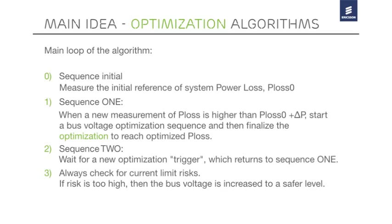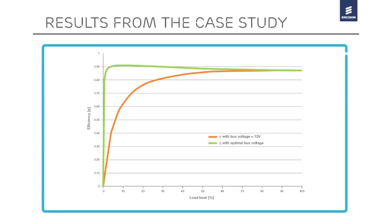This diagram is self-explanatory. It shows the results of the system efficiency optimization at different payload conditions. The orange line corresponds to the global system efficiency when the intermediate bus is fixed at 12 volts. The green line corresponds to the global system efficiency when bus voltage is optimized to payload condition. It is obvious that the reduction of power losses are much higher at light load,